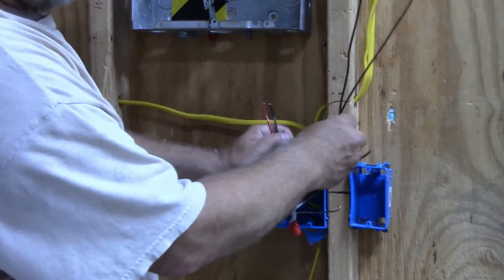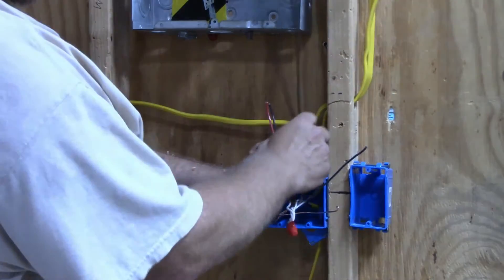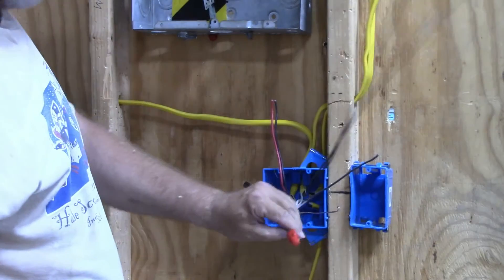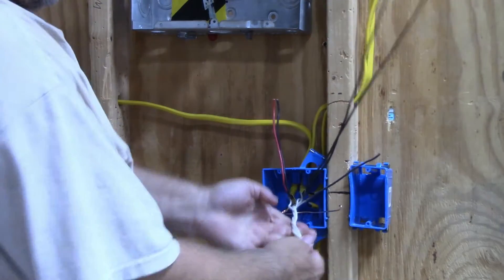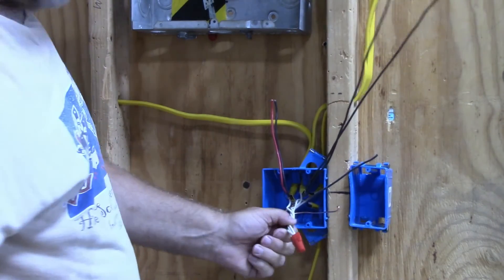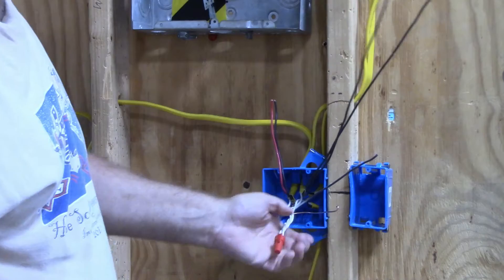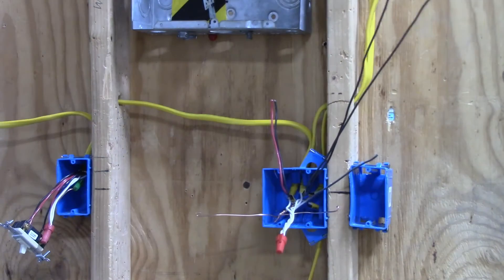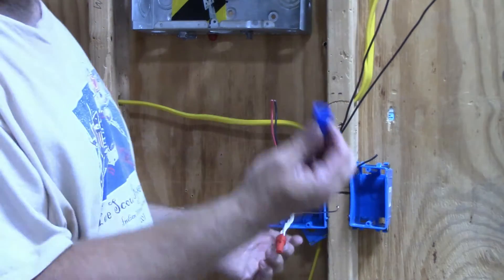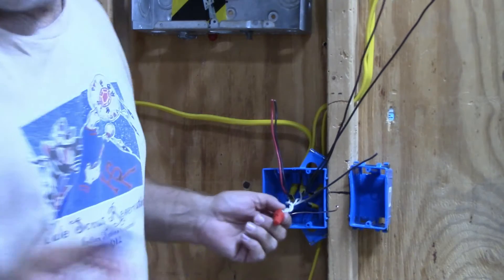If you're using the new switches that have a neutral on them, then you would need to put two pigtails off of here. Then you'd have six wires which does not fit into a red wire nut. You would have to go up to a blue wire nut if you were going to put two neutral pigtails on there.